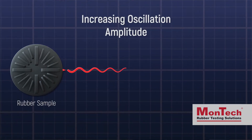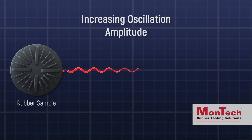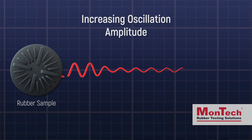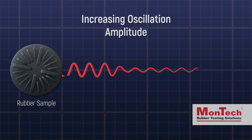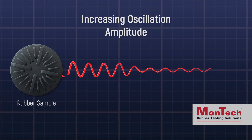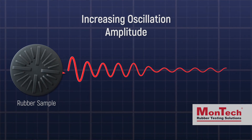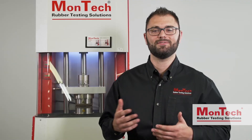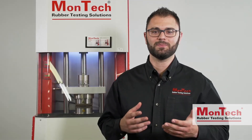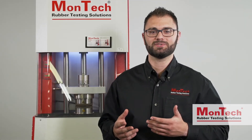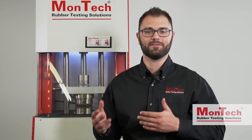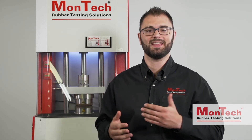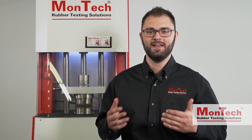The Payne effect is characterized by a drop in storage modulus as the amplitude of the sinusoidal oscillation increases, which reflects a weakening of the filler network. The strength of the filler network comes from the van der Waals force in the case of compounds with carbon black filler, or hydrogen bonds in the case of compounds with silica filler.